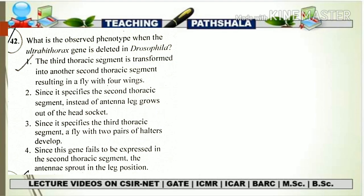We have made a quick revision of all the things studied in our previous video. Now, regarding this question: they have asked what will be the phenotype of Drosophila if the ultrabithorax gene is deleted. From the previous video, we have seen that whenever there is a deletion or mutation of the ultrabithorax gene, the T3 segment — which was showing expression of ultrabithorax — is going to convert or transform itself into a T2 segment, and also show the overall phenotypic effect just like the T2 segment.